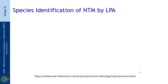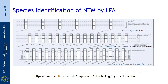Next we come to the line probe assay, a molecular methodology used for species identification of NTM. Three kits are available, manufactured by Hain Lifescience. The first is the Genotype MTBC kit, used for species identification within the MTBC complex. The second and third are the Genotype Mycobacterium CM and Genotype Mycobacterium AS kits, which can identify up to 30 pathogenic non-tuberculosis mycobacteria species. In these methodologies, DNA is extracted from the culture, subjected to amplification and hybridization with specific probes, and characteristic band formation is used for species identification.